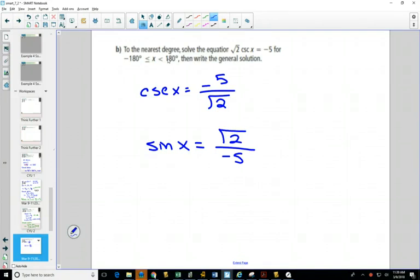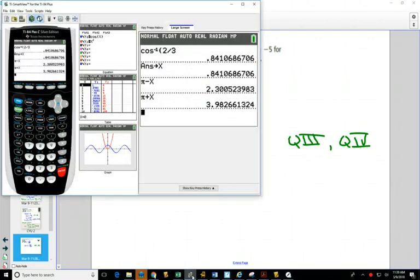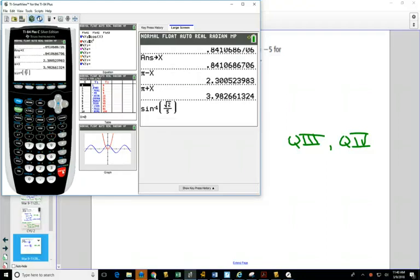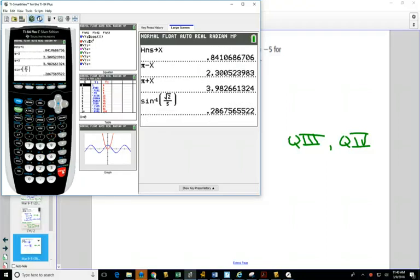Sine is negative. We know this is going to be in quadrant 3 and quadrant 4 from our cast rule. That value is not on our π plate. So once again, we go to our calculator to find our reference angle. Sine inverse, we have a fraction, I'm going to use my fraction button. And when we're finding our reference angle, it's always based on the positive value, so root 2 over 5. We never put our negative value when finding our reference angle, and we get 0.29.